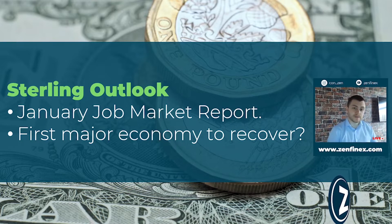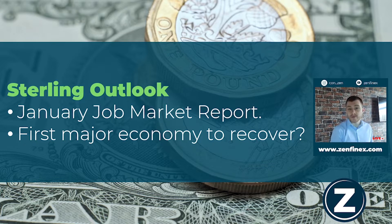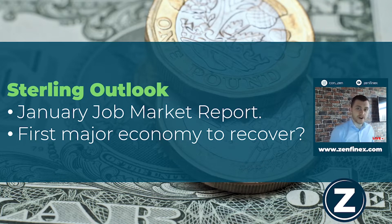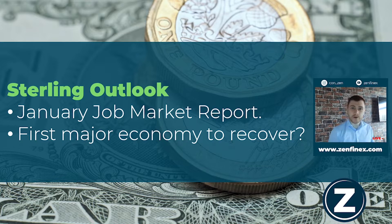From a sterling outlook, today we saw the publication of one of the week's most influential UK data releases — the January job market report. The UK's job market had a mixed report. The unemployment rate was at 5% compared to the 5.2% forecasted. However, the outlook wasn't so good for average earnings, which fell, and the claimant count actually increased quite significantly — I think it was over 80k. The markets have taken this as bearish news for sterling and we've seen weak data weigh on market optimism for the UK recovery.